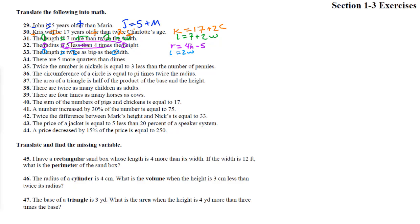Number 34: there are five more quarters than dimes — that's a hard one. The quarters have to be the dimes plus five, so Q = D + 5. When it says there are five more quarters than dimes, that means the quarters are five more than the dimes.